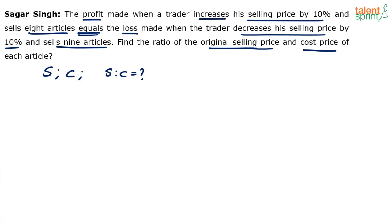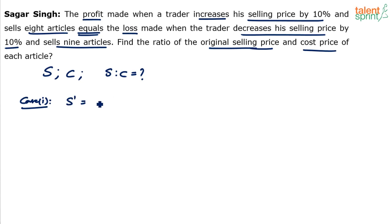Now in case 1, the trader increases the selling price by 10%. So the new selling price S dash will be equal to 110% of S, which is equal to 1.1 times S.